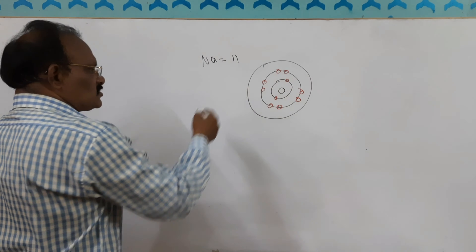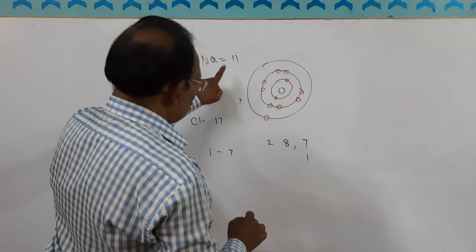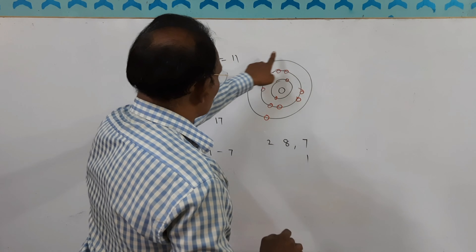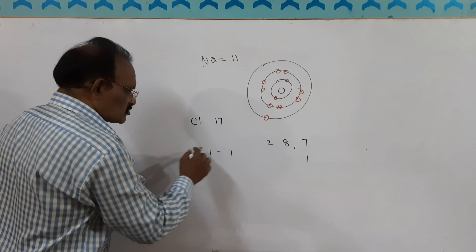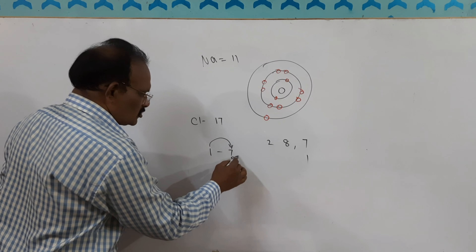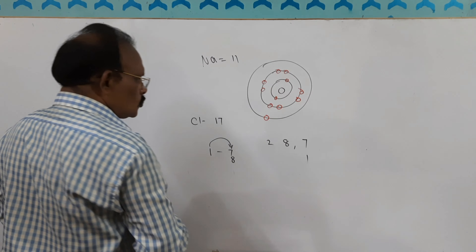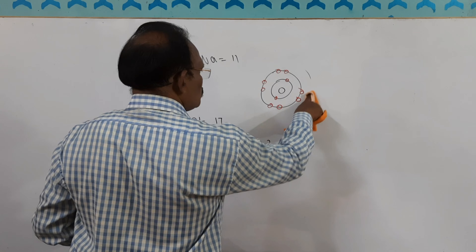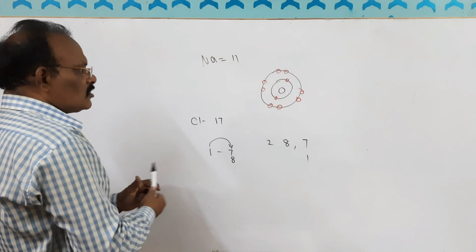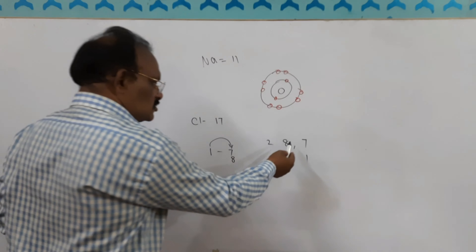Since sodium and chlorine are both unstable, they mutually form a bond — a covalent bond. Sodium has 1 electron in its outermost shell and requires 7 more, while chlorine has 7 and requires only 1. So sodium shares its 1 electron with chlorine. That electron is shared, making chlorine's outermost shell complete with 8 electrons — both atoms achieve octet.